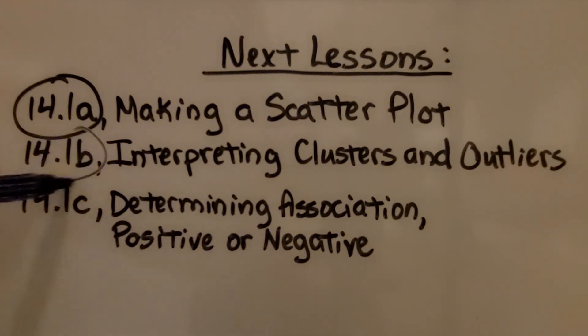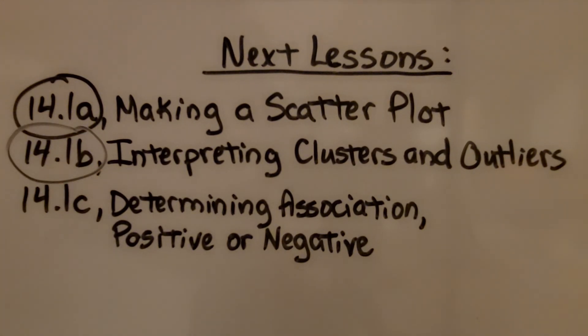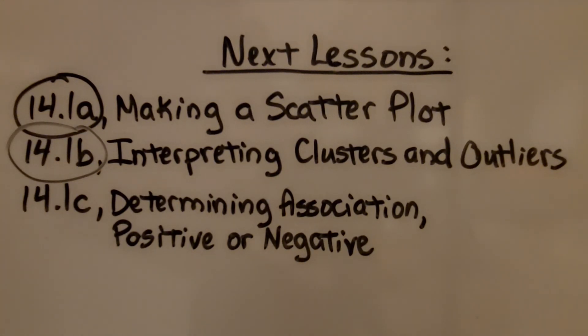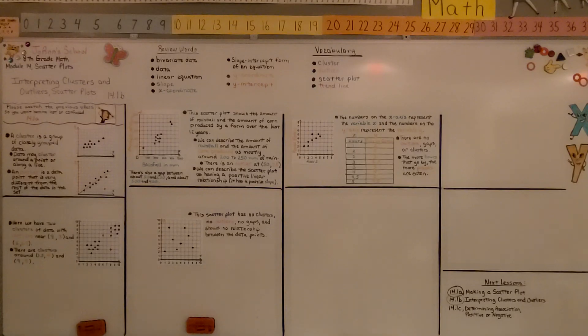We're finished with Part B. We're going to move on to the last part, determining association, positive or negative. We're going to look at the data points on the scatter plot to figure out if they're positive or negative. Have a great day, and join me for the last part of the lesson. Bye.